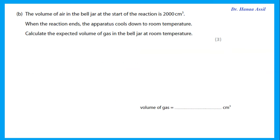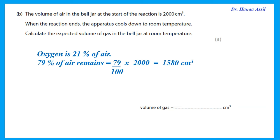The volume of air in the bell jar at the start is 2000 cm³. Calculate the expected volume of gas remaining at room temperature. We are removing oxygen, which makes up 21% of the air. After the reaction, we are left with 79% of what we started with: 79% of 2000 = 1580 cm³.